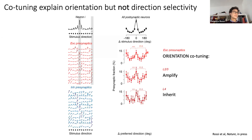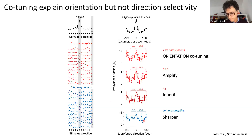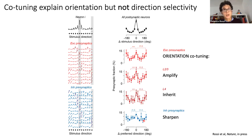The situation is slightly different for inhibitory presynaptic neurons. Inhibitory presynaptic neurons tend to be less tuned than their excitatory counterparts and the presynaptic ensemble is more diverse — there is just a light bias for the preferred orientation of the postsynaptic neuron. Therefore, I conclude that input co-tuning can generate orientation tuning, with orientation inherited from layer four and amplified in layer 2/3, perhaps sharpened by broadly tuned inhibition, but co-tuning cannot explain the direction preference of the postsynaptic cell.